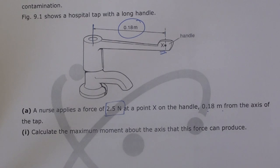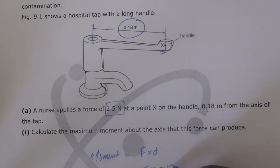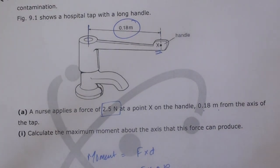Calculate the maximum moment about the axis that this force can produce. So moment is equal to force into perpendicular distance. Force is given as 2.5 multiplied by perpendicular distance 0.18. So with this, the maximum value that we're going to get is 2.5 times 0.18.